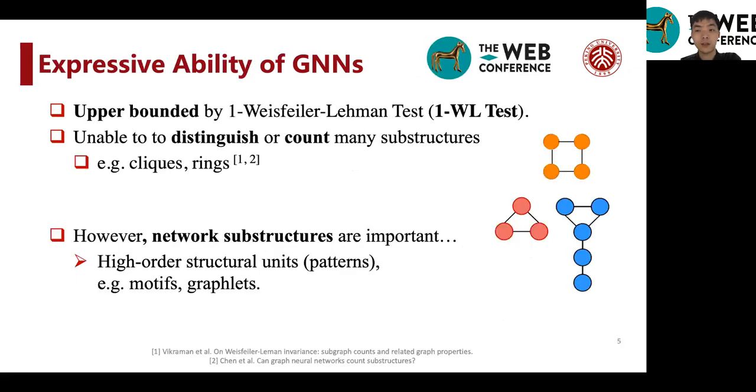More specifically, this work talks about the expressive ability of GNNs. Despite the power of GNNs in many practical tasks, theoretical results have shown that the expressive ability of GNNs are upper bounded by the one-Weisfeiler-Leman test, or the graph isomorphism test.